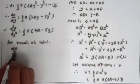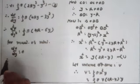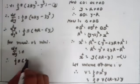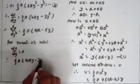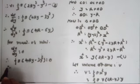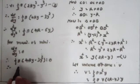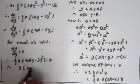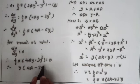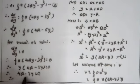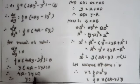Setting dV/dy = 0: (1/3)π(4Ry − 3y²) = 0. Taking y common: y(4R − 3y) = 0. Therefore y = 0 (not valid) or 4R − 3y = 0, giving y = 4R/3.